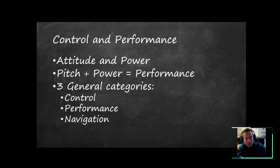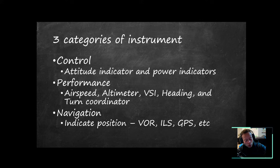Let's talk about control and performance. We typically set the airplane with some pitch or attitude and then some power setting, and that pitch plus power gives us some performance. There are three general categories of instruments: control, performance, and navigation. Control instruments tell the airplane what we want it to do — for example, the attitude indicator. I want my nose on the horizon, wings level. And then our power indicators — I want to set my power, say, 2300 RPM.